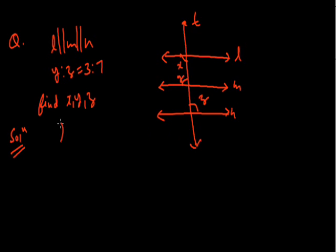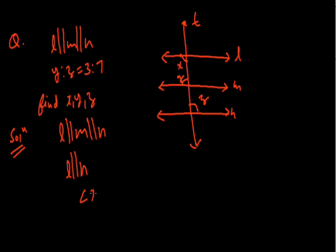As L is parallel to M and M is parallel to N, we can say that L is parallel to N. Therefore, angle X is equal to angle Z, because they are alternate interior angles.